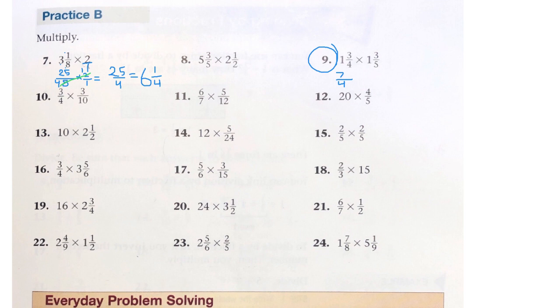Now 5 times 1 is 5. Plus 3 is 8. And then you put the original denominator of 5. And we're multiplying.